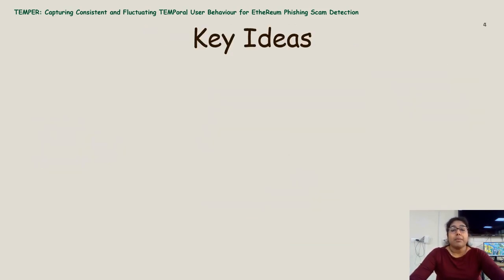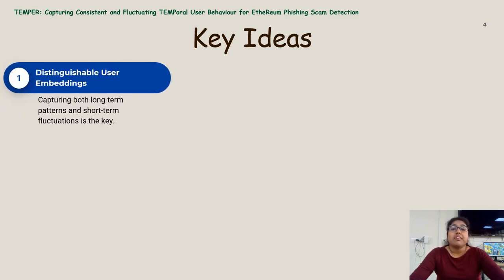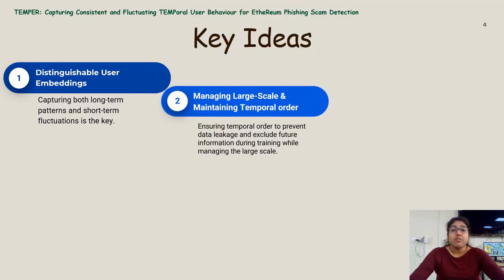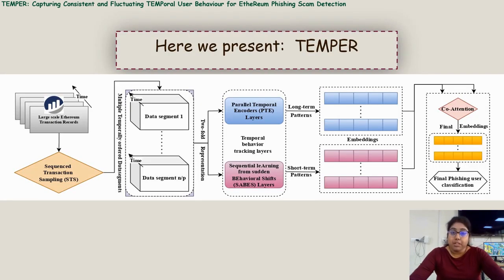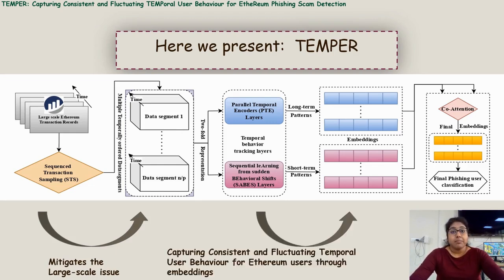To mitigate these challenges, we come up with three key ideas. First, we obtain distinguishable user embeddings. Second, we maintain the temporal order while managing the large scale of the network. Third, we deal with the sparsity. Keeping this in mind, we propose Temper, where the first module manages the large-scale issue while maintaining temporal order, the second module captures consistent and fluctuating user behavior while obtaining embeddings, and the third module classifies the phishing users.